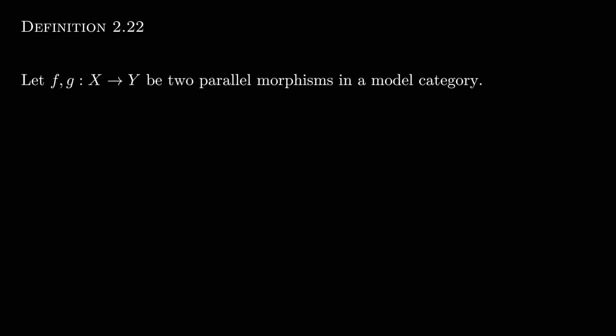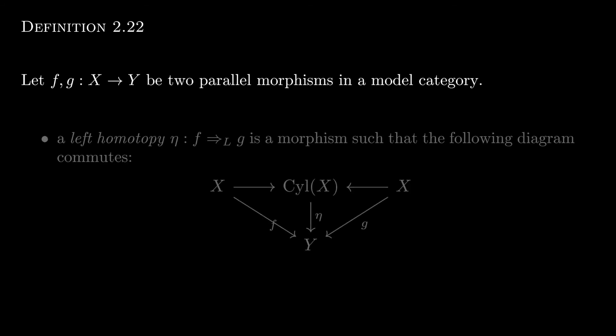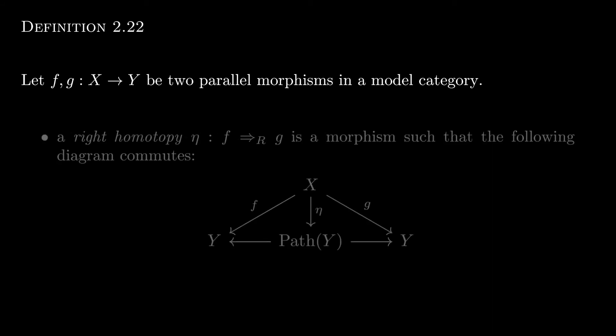Returning to definitions, left and right homotopies are defined as they were in the topological case, with cylinder objects and path space objects respectively. But of course, in the abstract setting of a model category, we use the abstract definitions of these objects.